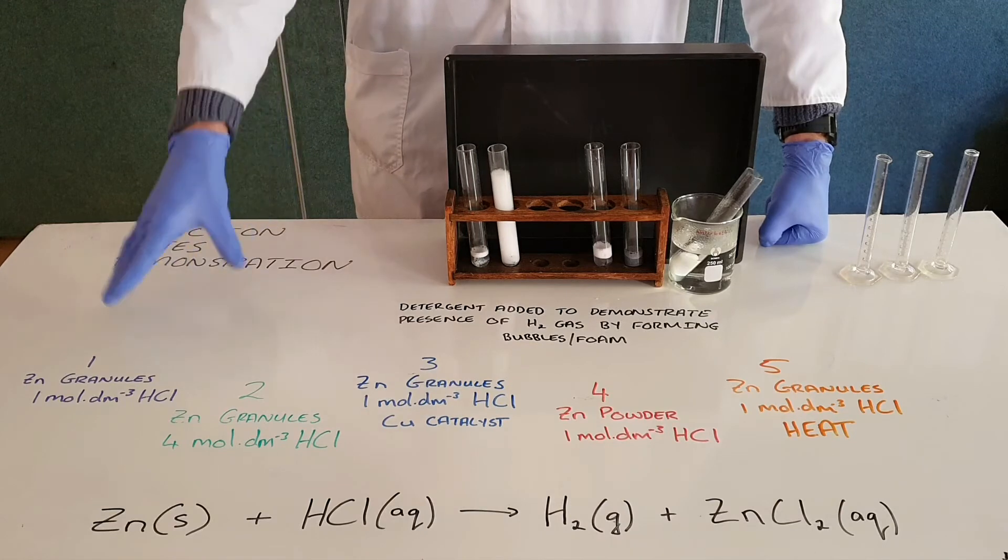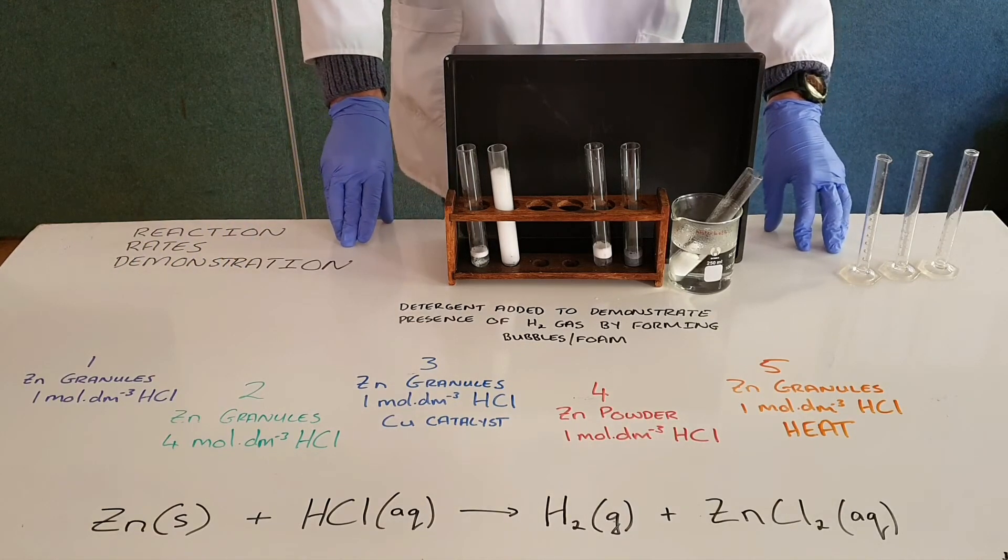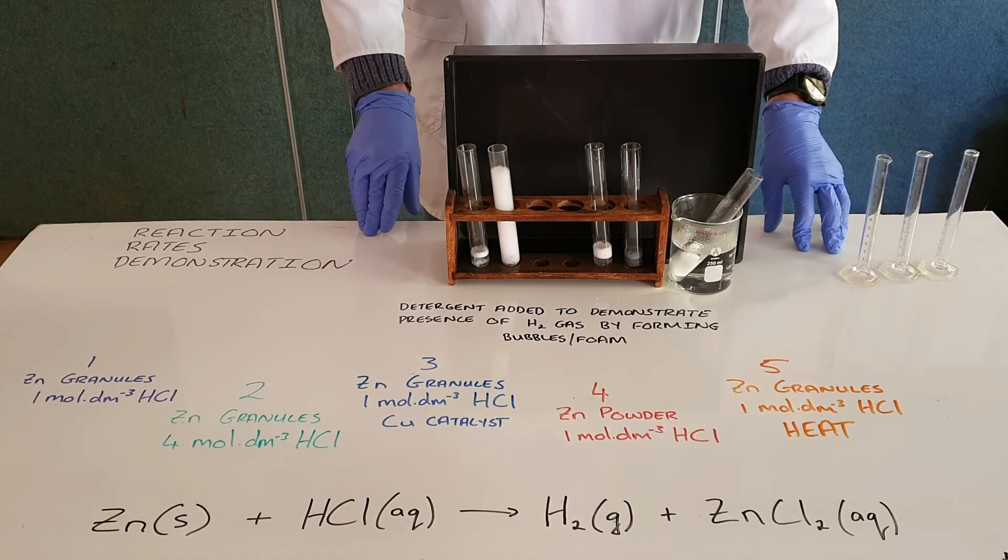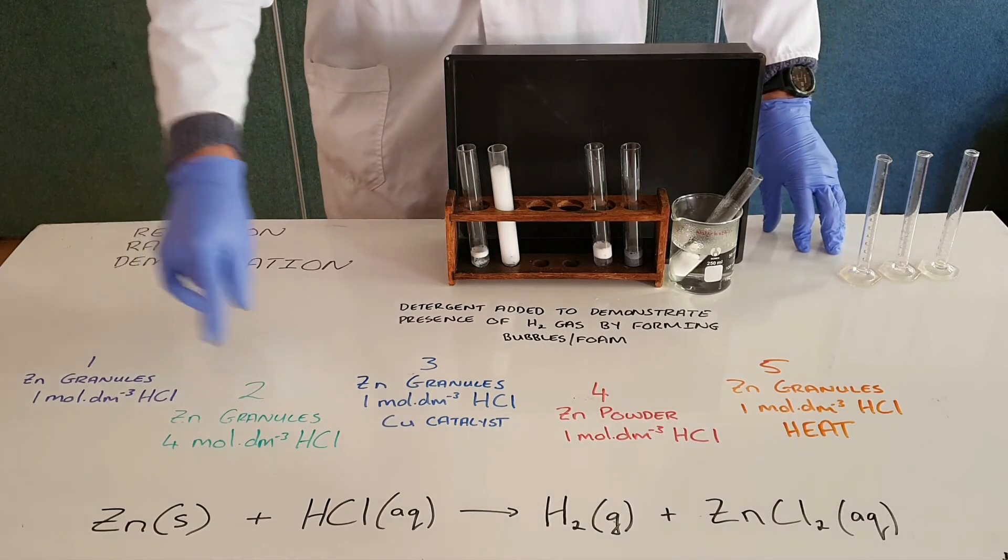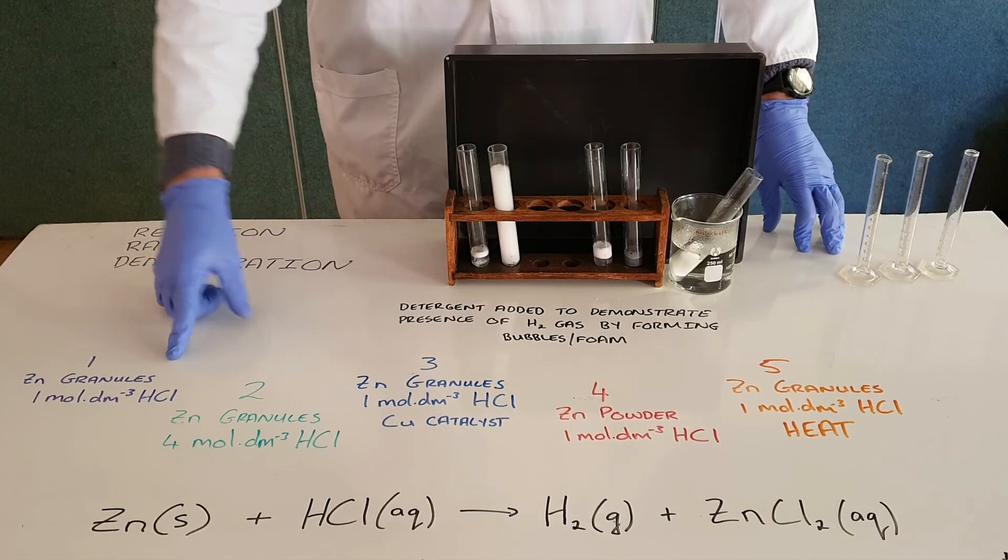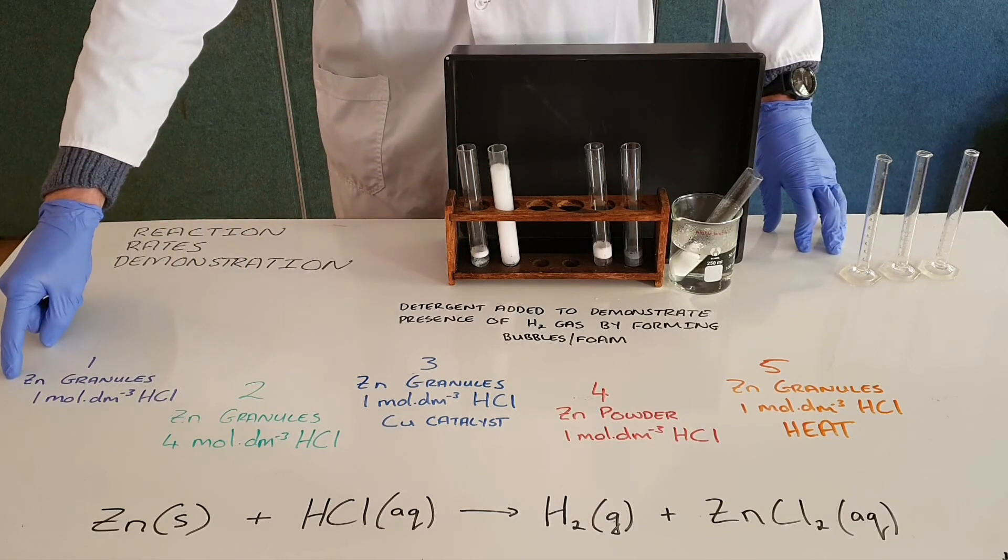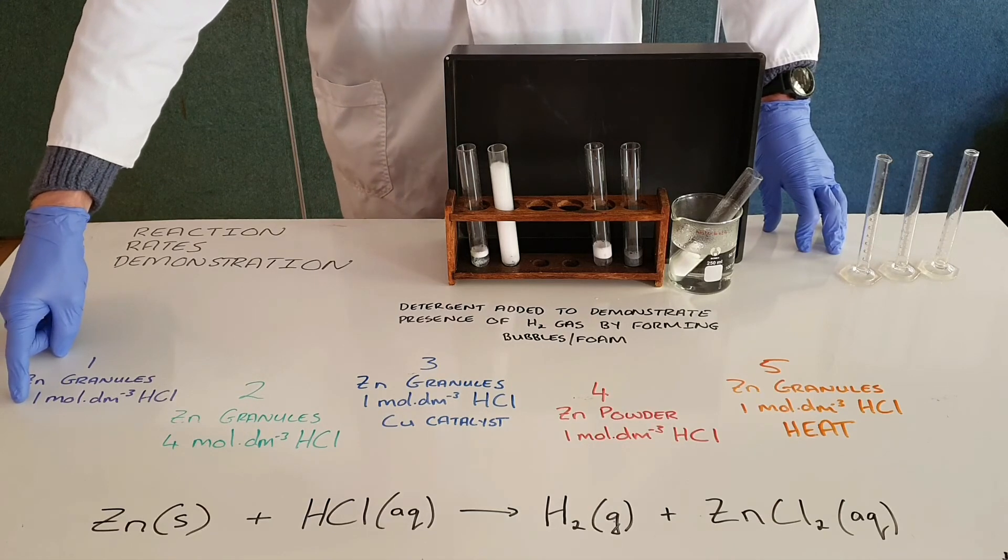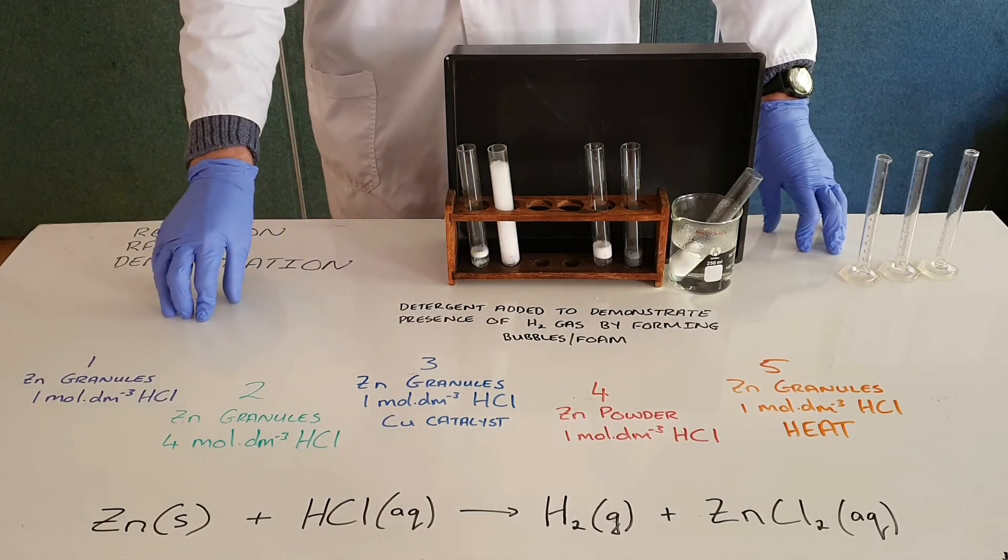So here we have a good layout of an experiment that allows us to compare the rates and the rate changes by different factors. Because we have used a constant in each experiment, we have either kept the surface area constant by using granules, or we have kept the concentration constant and only made one change to each test tube.